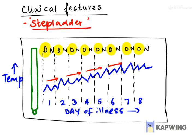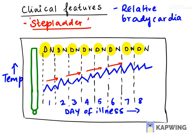These children also exhibit something called relative bradycardia. What is the meaning of this? We are expecting tachycardia whenever there is a fever. The relationship is: for every one degree rise in temperature, the heart rate increases by around 10 to 15 beats per minute. But this increase is not observed in case of enteric fever, and that is what we call relative bradycardia.